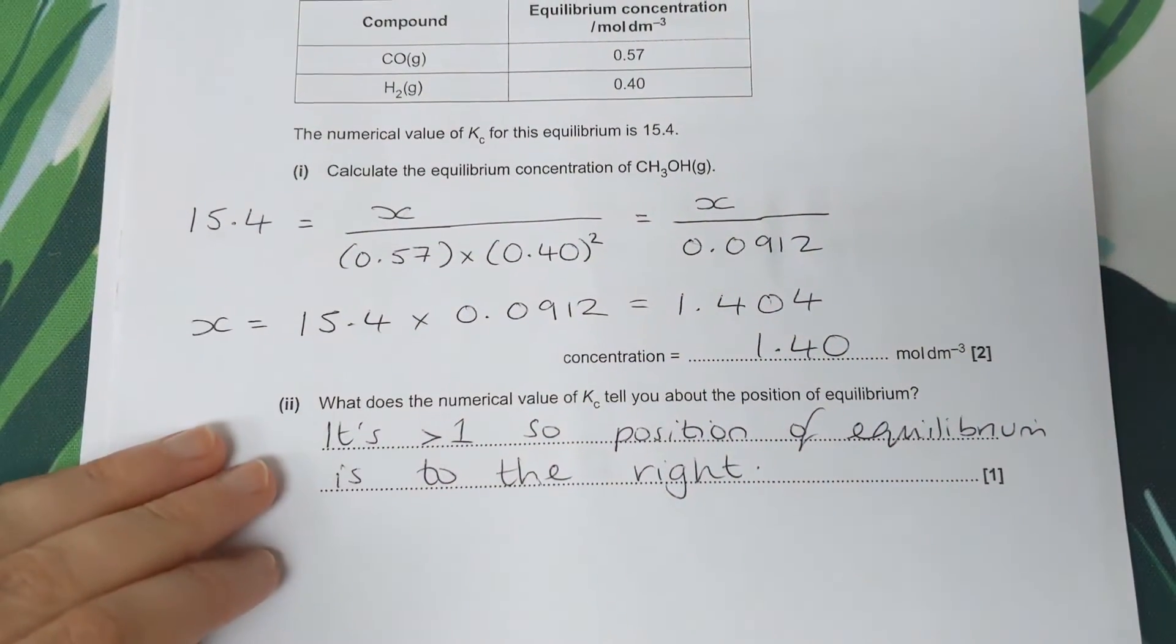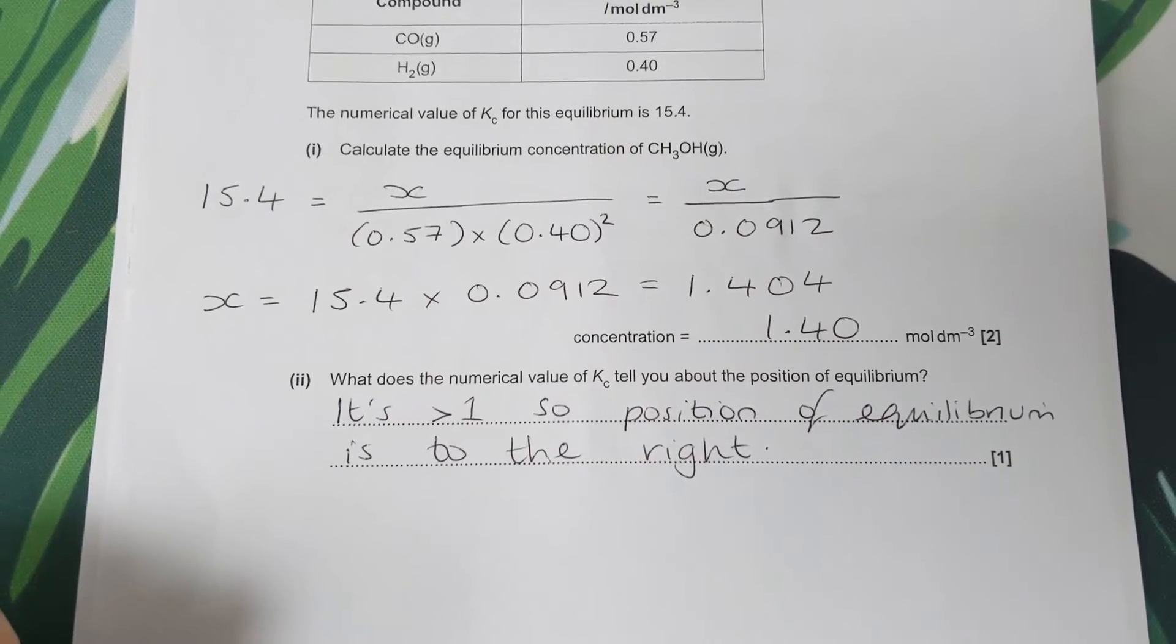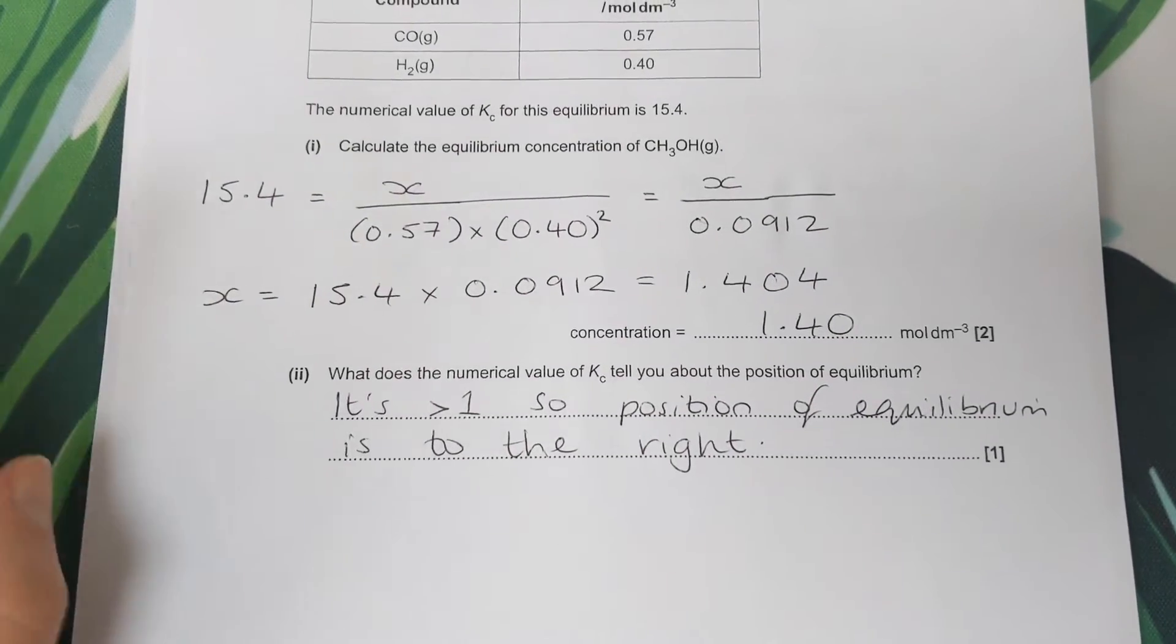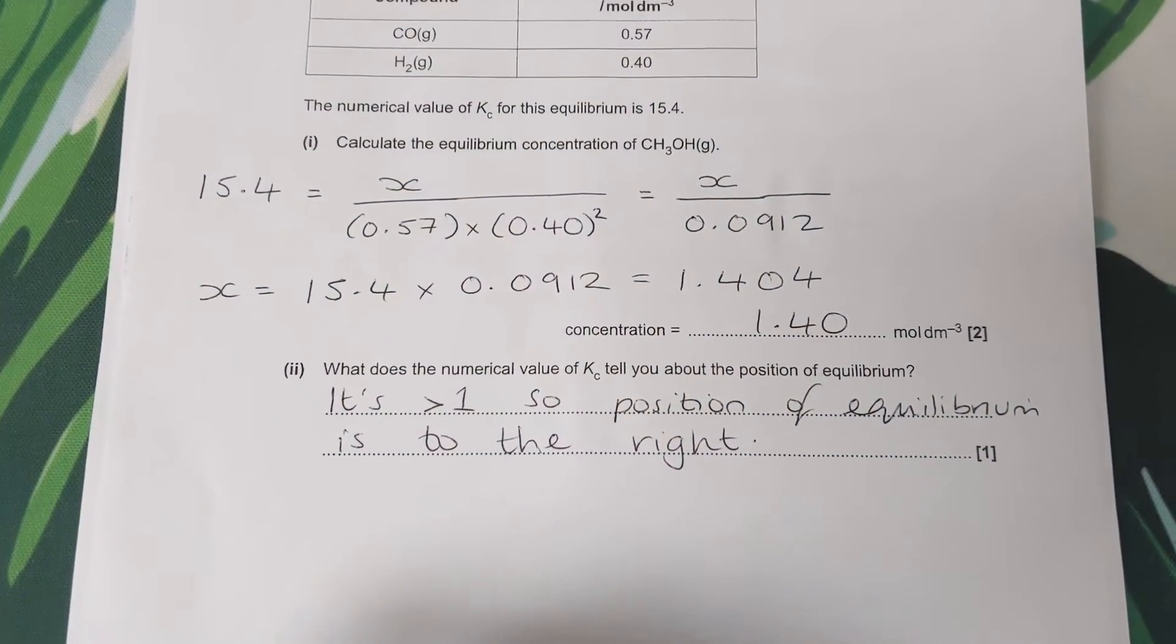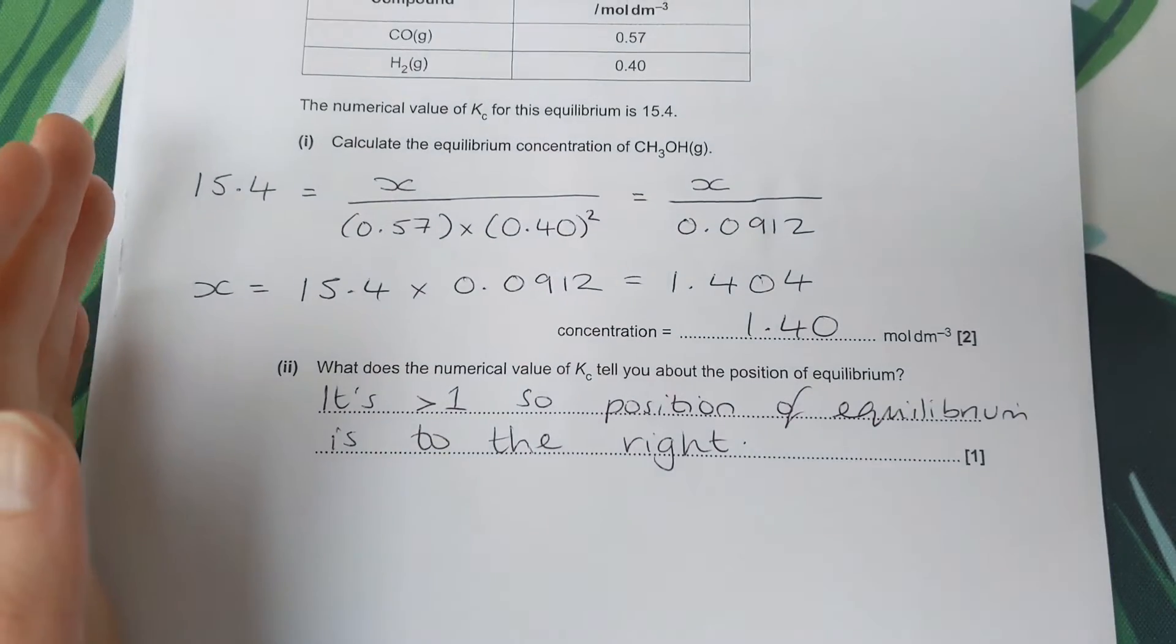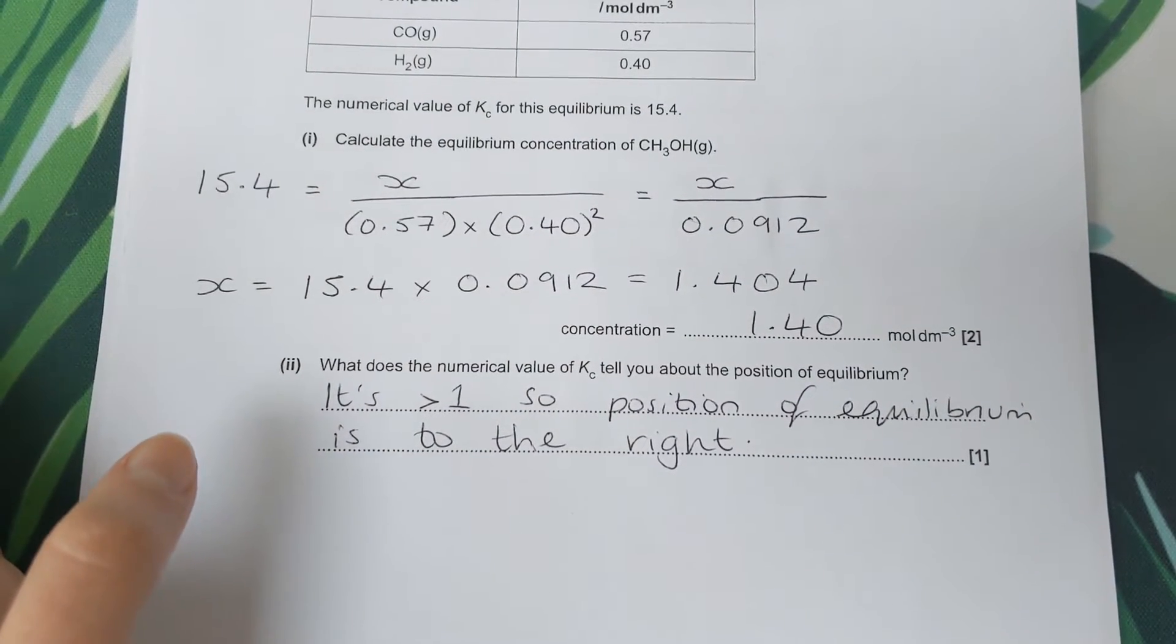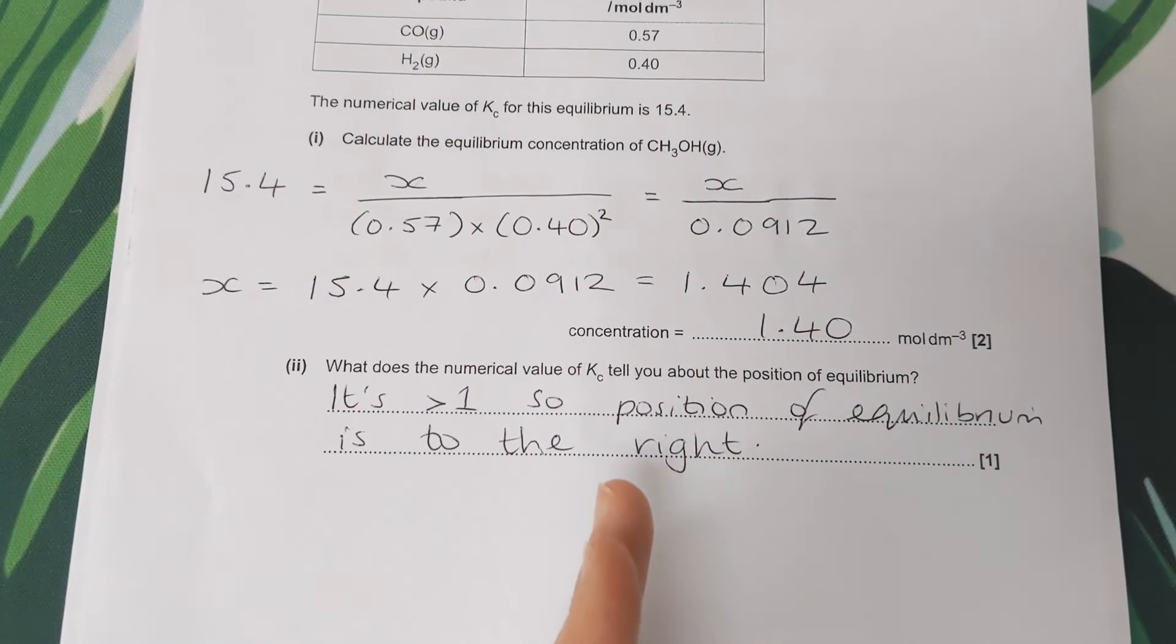Then it asks, what does the numerical value of KC tell you about the position of equilibrium? A KC value of more than 1 tells us that the position of equilibrium is towards the products, or towards the right. If it was less than 1, it would be towards the reactants, or towards the left. If it's exactly 1, then it's in between the two.